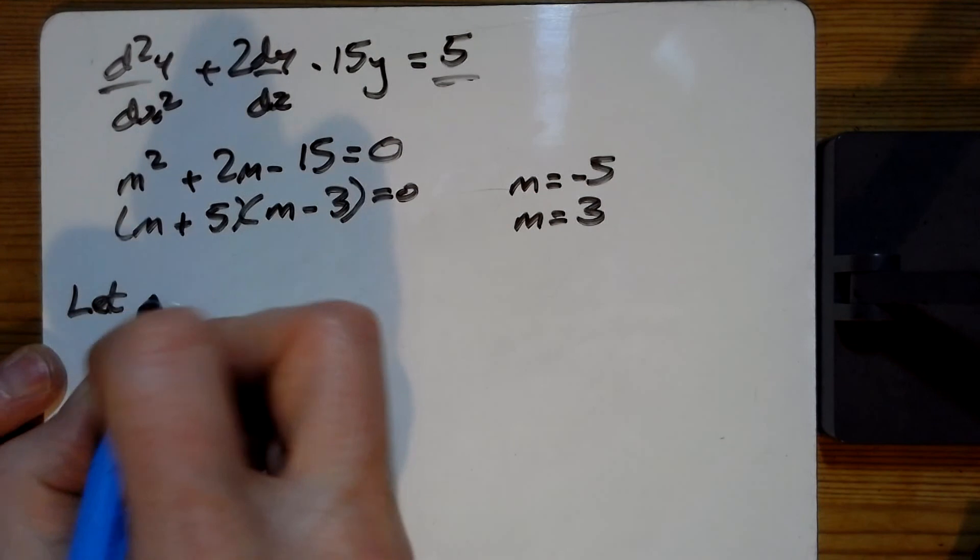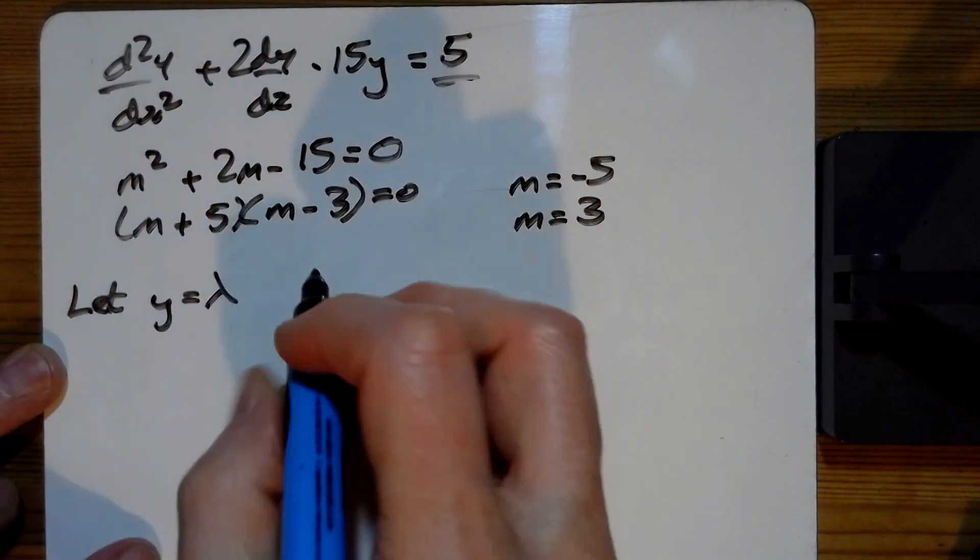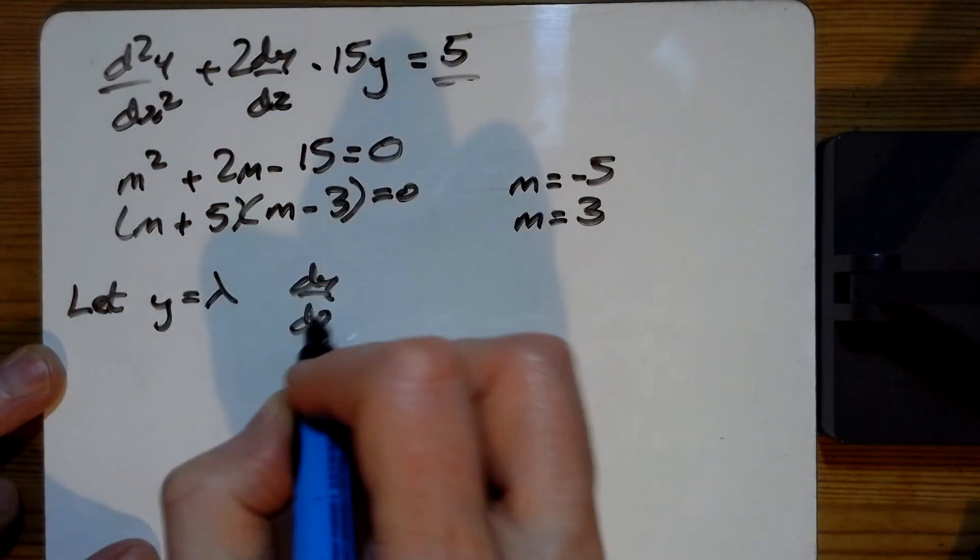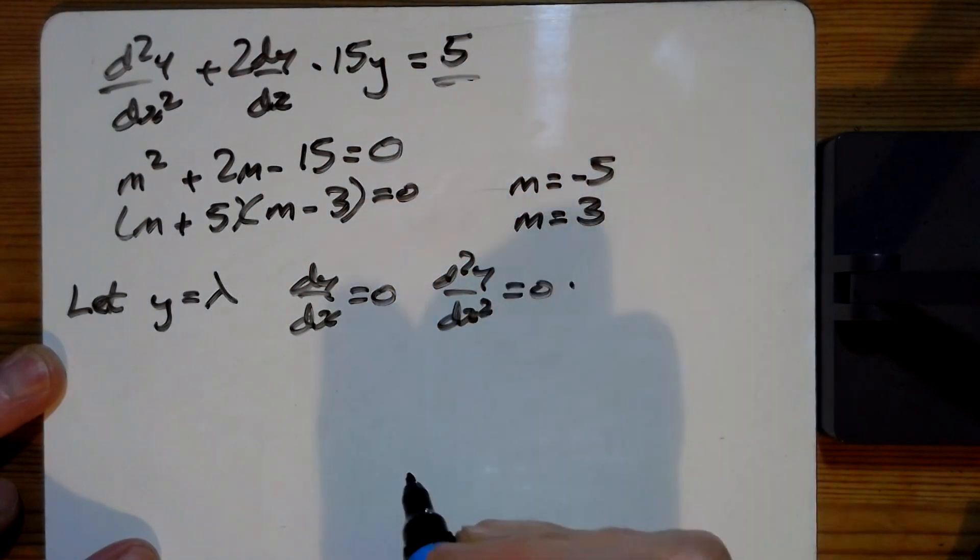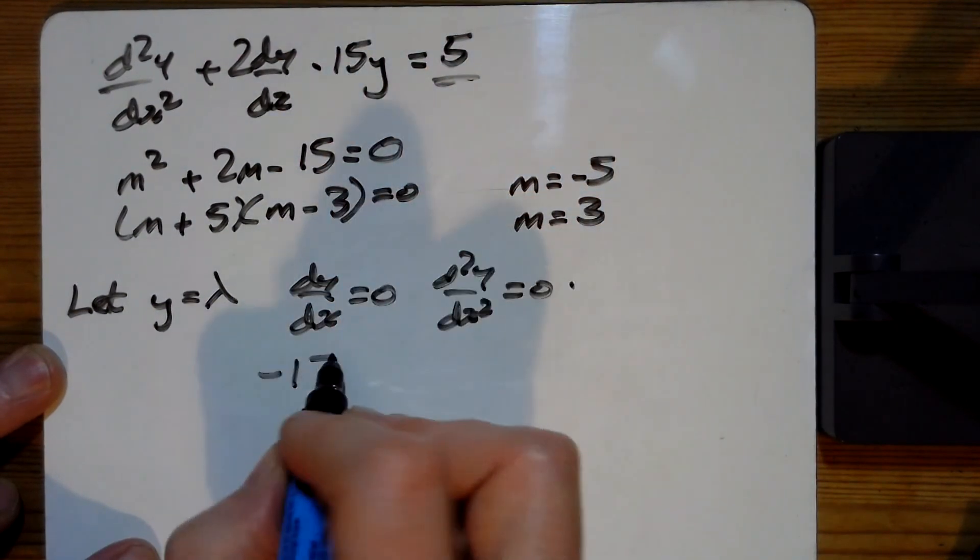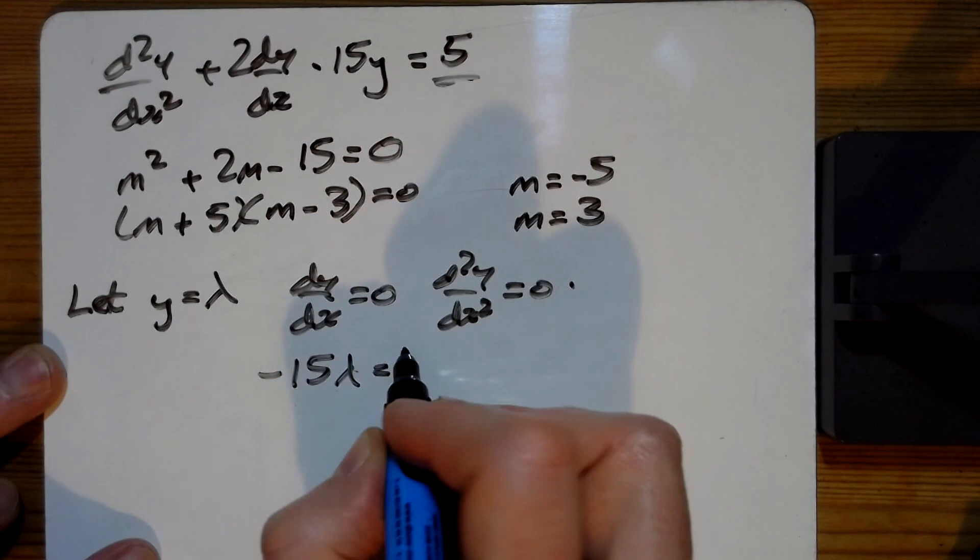We're going to say let y equal lambda. And so dy/dx and d²y/dx² are both equal to 0 in that case. And we just get minus 15 lambda equals 5.